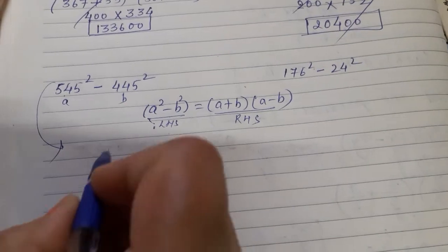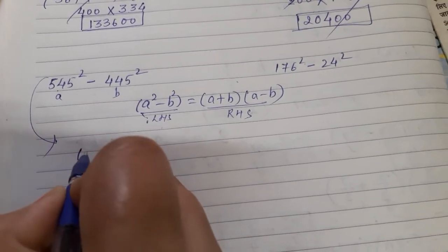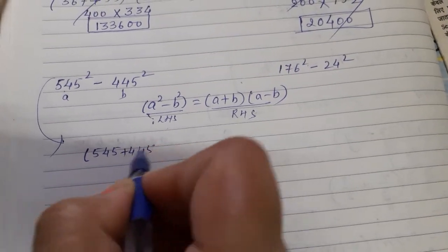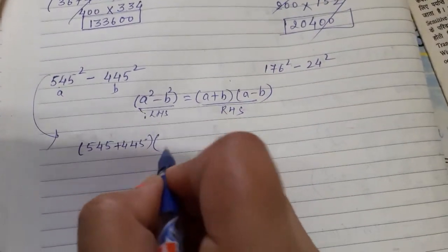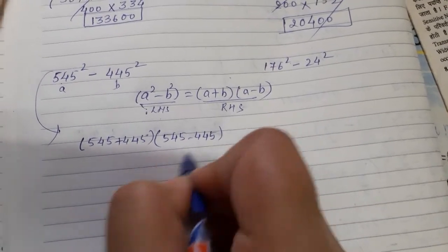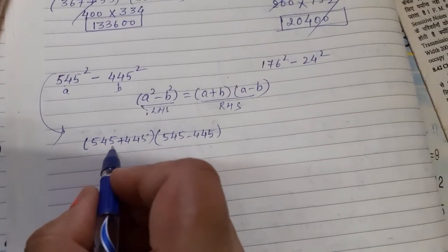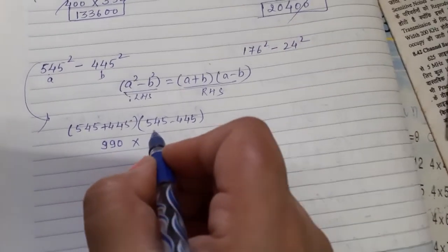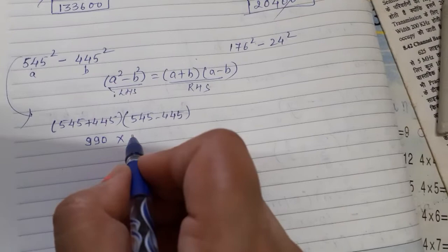So the expansion will be (545 + 445) times (545 - 445). 545 plus 445 gives us 990, and 545 minus 445 gives us 100.